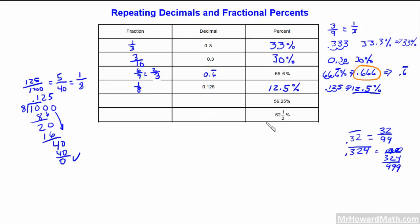Now for this example, 56.25%. Again, to take it to a decimal, we can just move the decimal place two places to the left, remove the percent sign, so we get 0.5625.